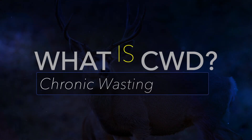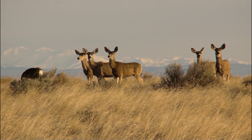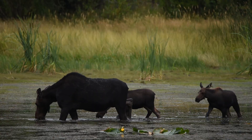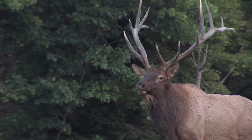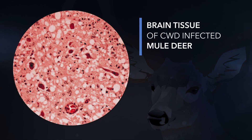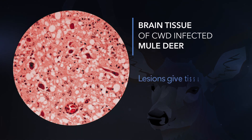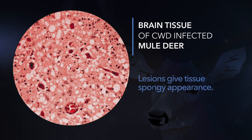CWD is the acronym for chronic wasting disease, which is a prion disease found in ungulates — deer, elk, moose, and now caribou. A prion is basically a misfolded protein. We all have proteins in our body in a certain structure, and this particular protein called a prion is misfolded — it's almost backwards. That misfolded protein is what seems to be associated with chronic wasting disease.